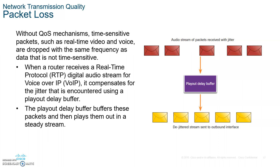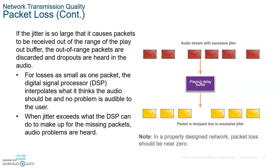The digital signal processor chip, which almost every communication device has, can predict what a lost packet is. It knows the packet before and the packet after, and can figure out what the packet in between should be. Less than 1% loss and you're pretty good, especially for voice and video. But if you have a lot of packet loss, the DSP won't be able to predict the missing packets, the quality becomes extremely poor, and you've got to disconnect and hopefully reconnect. Packet loss is important.